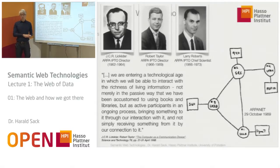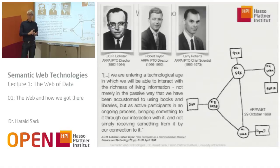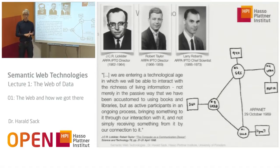Even longer ago, almost 60 years ago, back in the 50s, there was the first artificial satellite of the Earth built by the Soviets: Sputnik 1. They launched Sputnik 1 in 1957. And because of that, the United States thought they had to cope and catch up with the Soviets. They founded something called ARPA, the Advanced Research Project Agency.